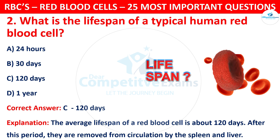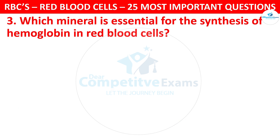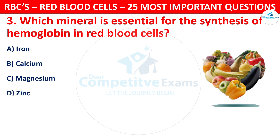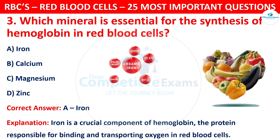Question 3. Which mineral is essential for the synthesis of hemoglobin in red blood cells? Your options are: Iron, Calcium, Magnesium, or Zinc. The correct answer is A, that is Iron. Iron is a crucial component of hemoglobin, the protein responsible for binding and transporting oxygen in the red blood cells.